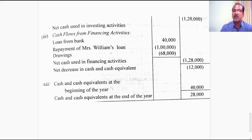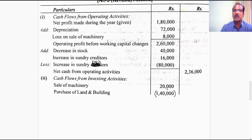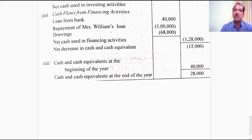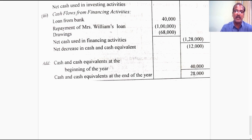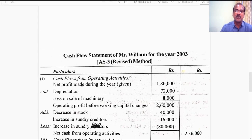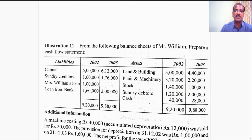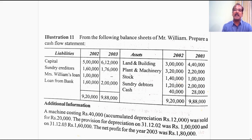Adding the three categories: minus 1,28,000, minus 1,20,000, plus 2,36,000 gives a net decrease in cash and cash equivalents of minus 12,000 during the current year 2003. Adding the opening cash and cash equivalents balance of 40,000 gives a closing balance of 28,000 rupees — the cash and cash equivalents at the end of the year. This is the idea behind this problem: preparing the cash flow statement for a sole proprietary concern under the indirect method as per accounting standard 3.